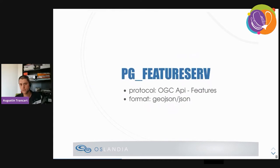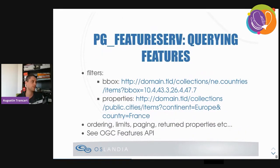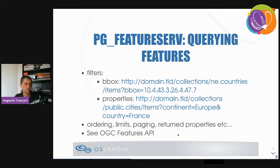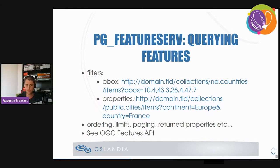On the other hand, PG FeatureServe uses the OGC API Features protocol — the new OGC standard. The format is GeoJSON, and you can also have a JSON format for non-geographic data. PG FeatureServe doesn't work with tiles, but you have more advanced features: you can filter on bounding boxes and on properties. For example, you can serve a cities table and filter by continent and country. You also have ordering, setting limits on results, paging, and limiting which properties are returned.